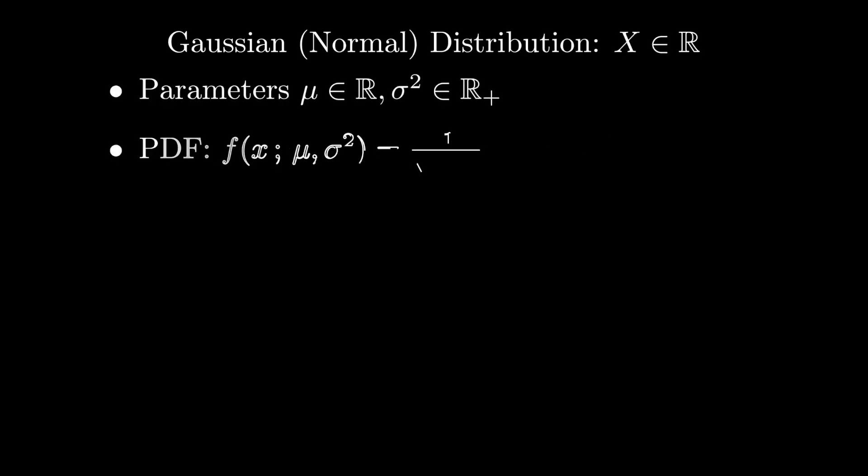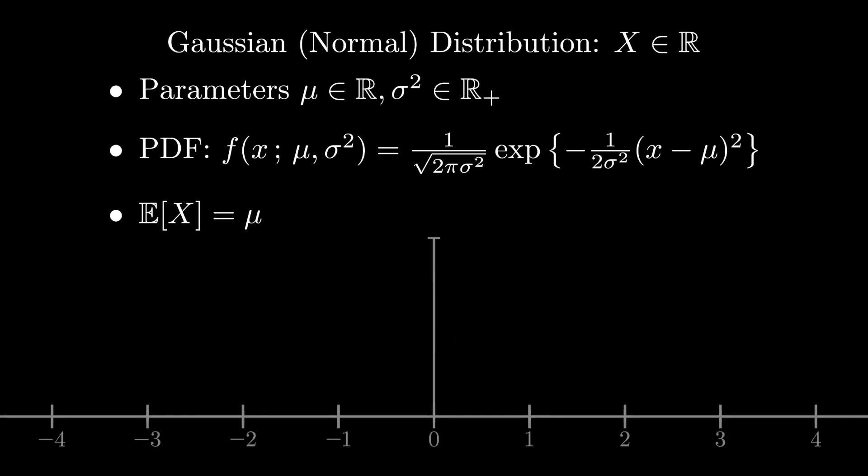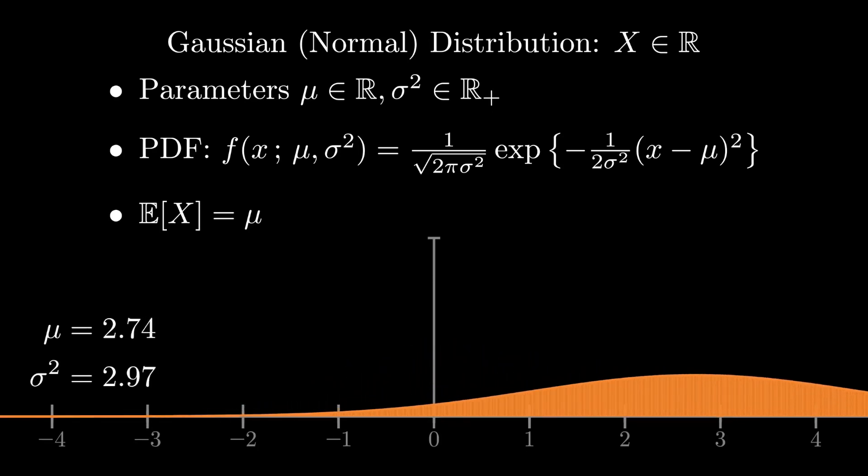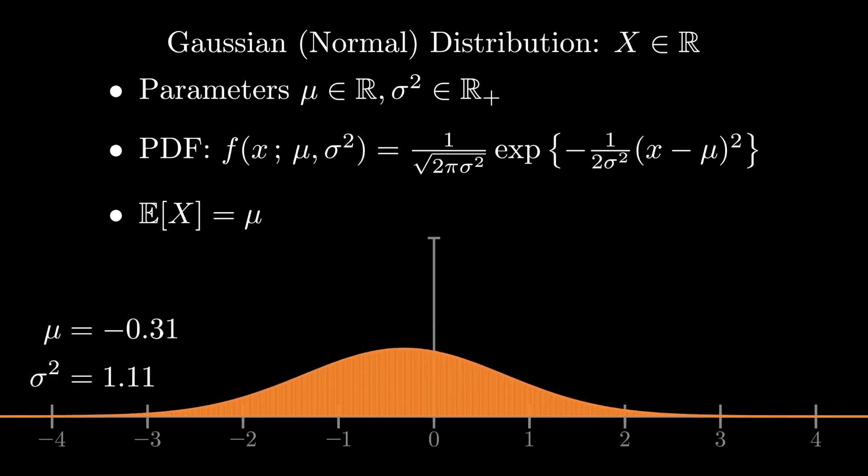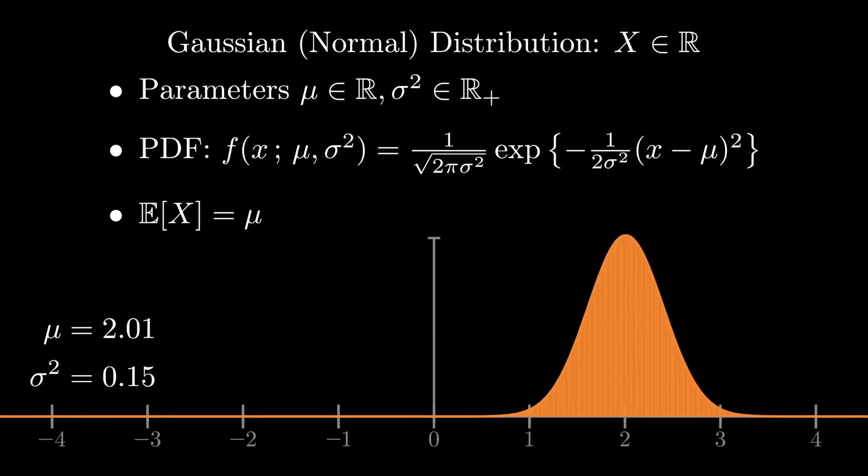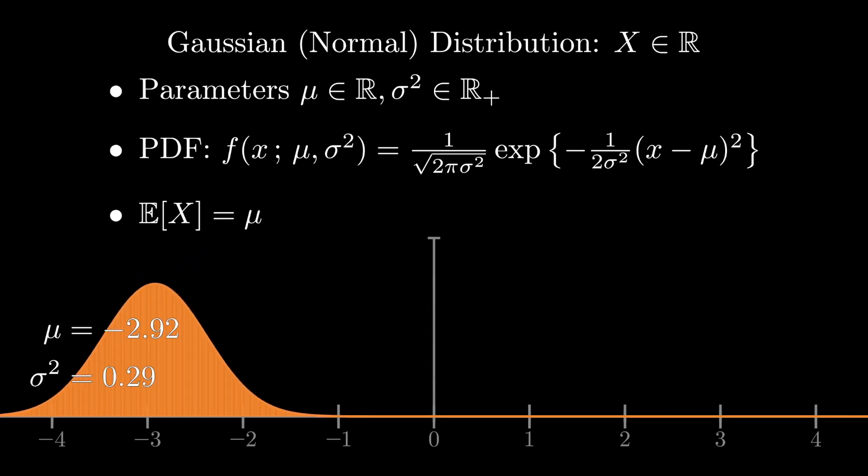What I want to do in this video is tell you about the Gaussian distribution. The Gaussian, or normal distribution, is easily the most important distribution in all of machine learning and statistics. I think everybody has some amount of intuition about the Gaussian distribution based on the idea of the bell curve. But there's really a lot more to the Gaussian distribution than just its classic bell shape.